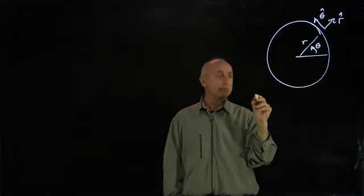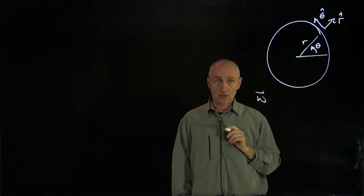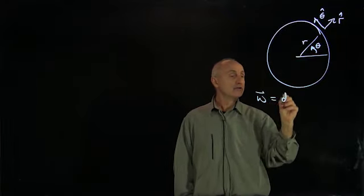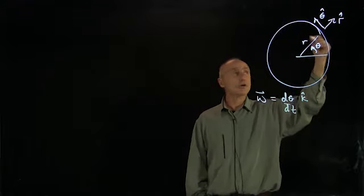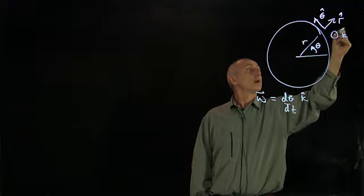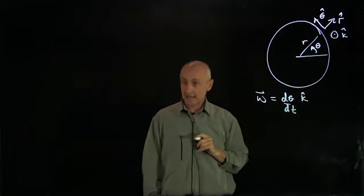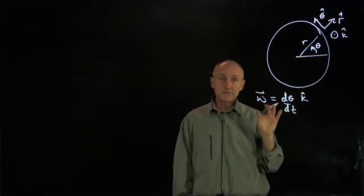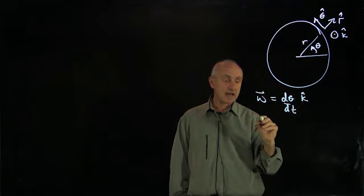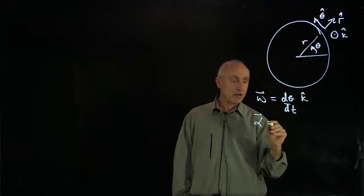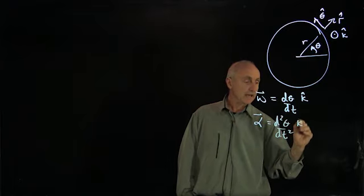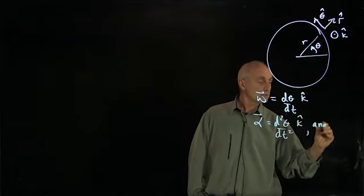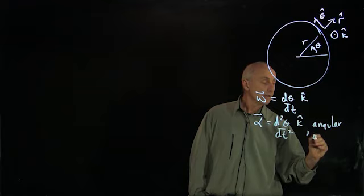Recall that we described the angular velocity as the derivative dθ/dt, and we made this perpendicular to our right-handed coordinate system direction k̂. Now let's differentiate that to get our concept of angular acceleration. So α is the second derivative d²θ/dt² k̂, and this quantity is what we call angular acceleration.